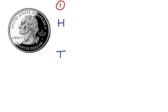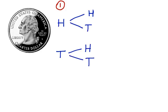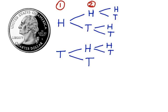Now the second time they flip the coin, we can again have a couple of outcomes — we can have heads or tails, or we could have heads or tails. This is on the second toss. So you see that each time the coin gets tossed, there's a different set of outcomes that can be used.